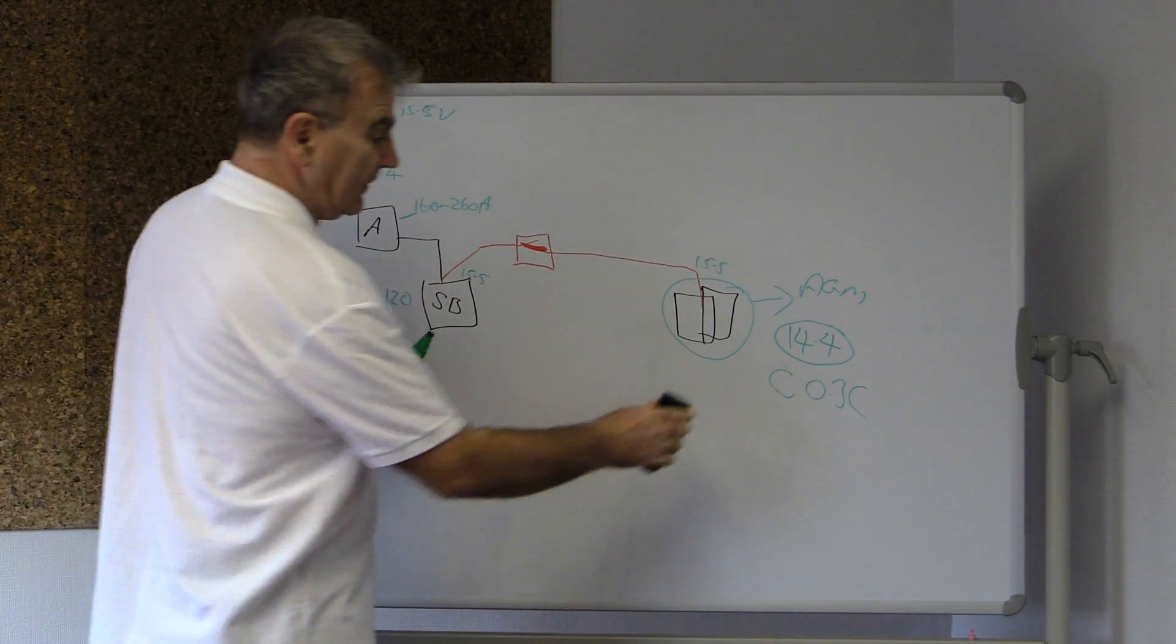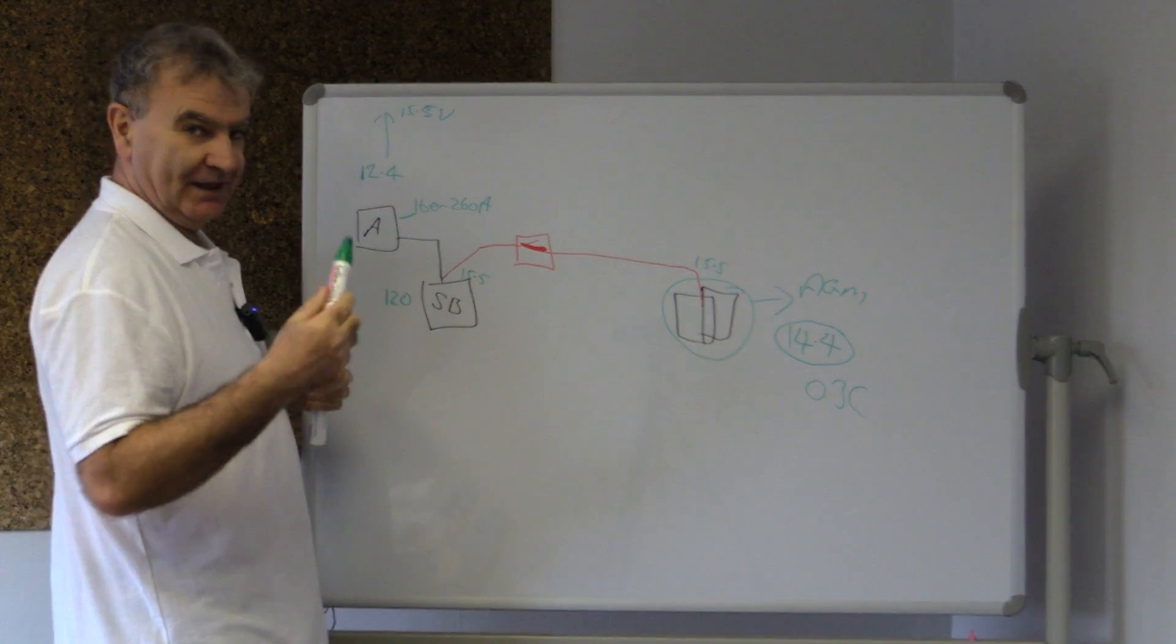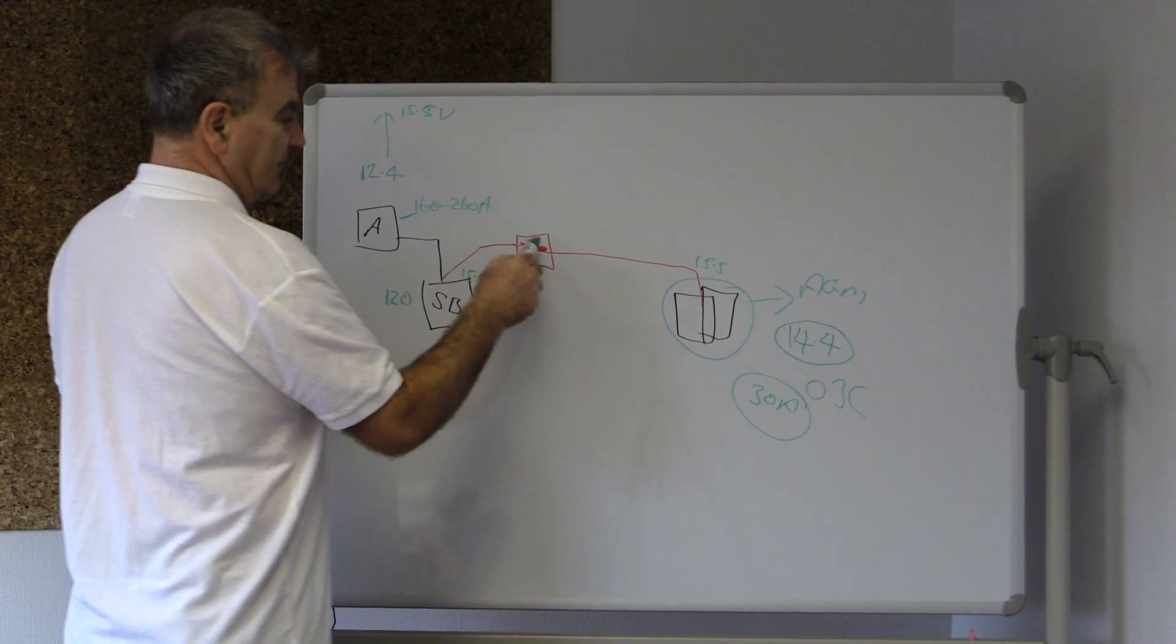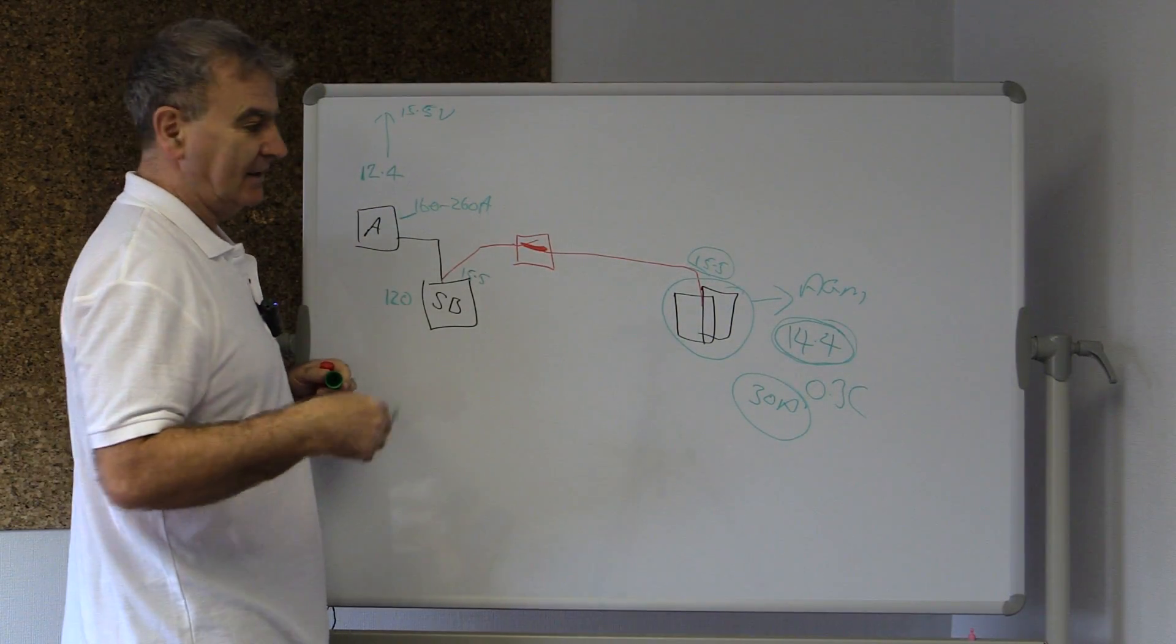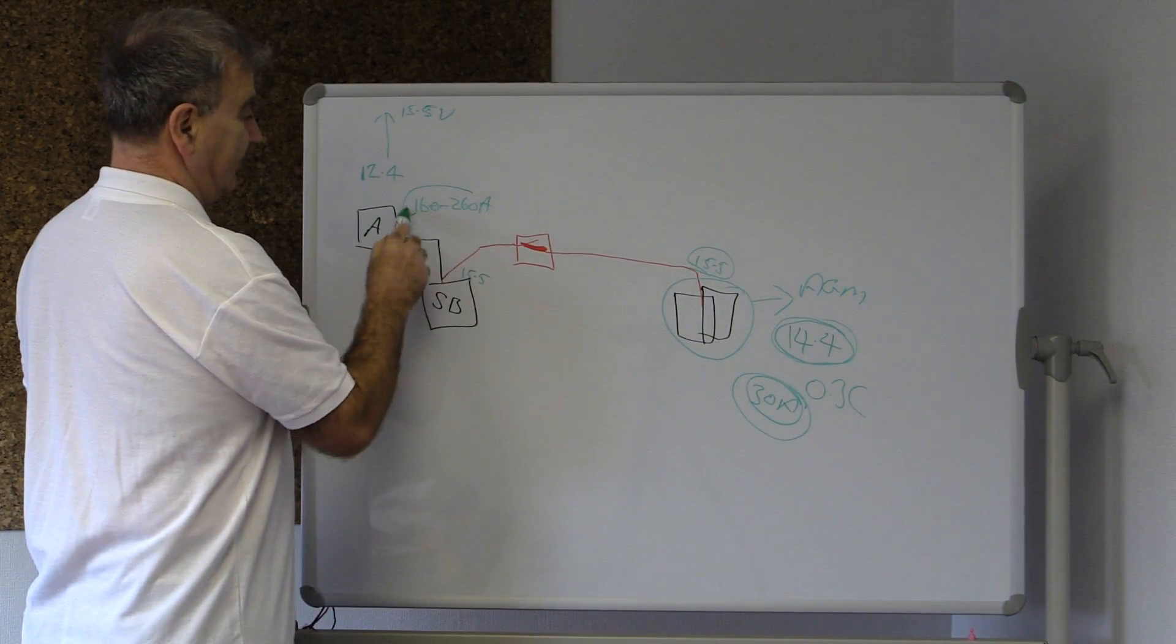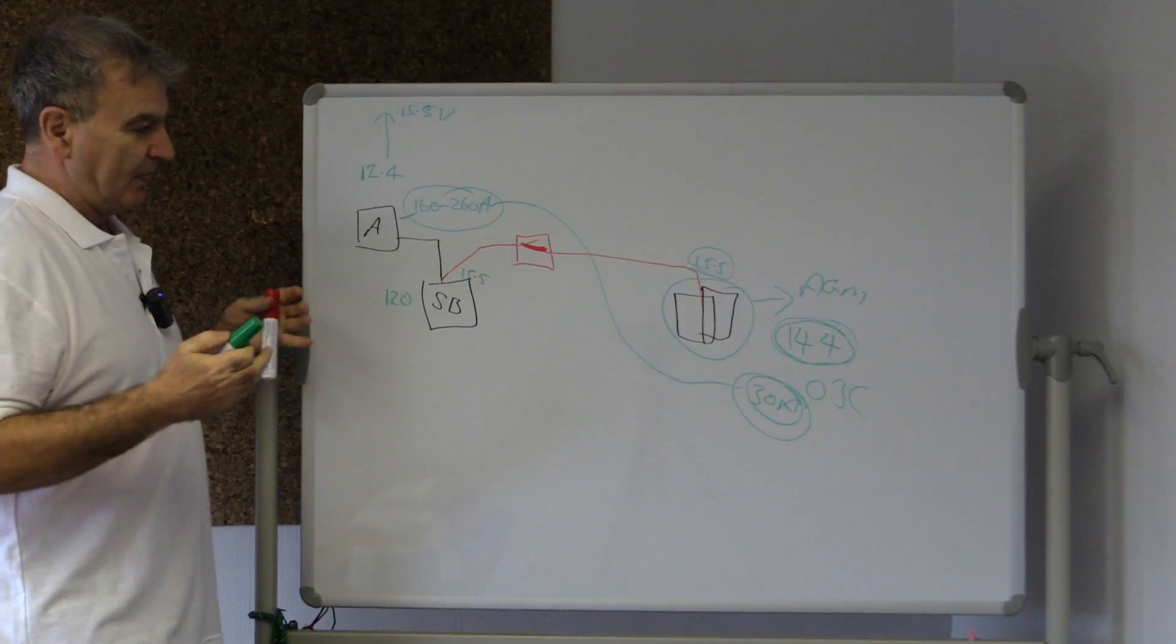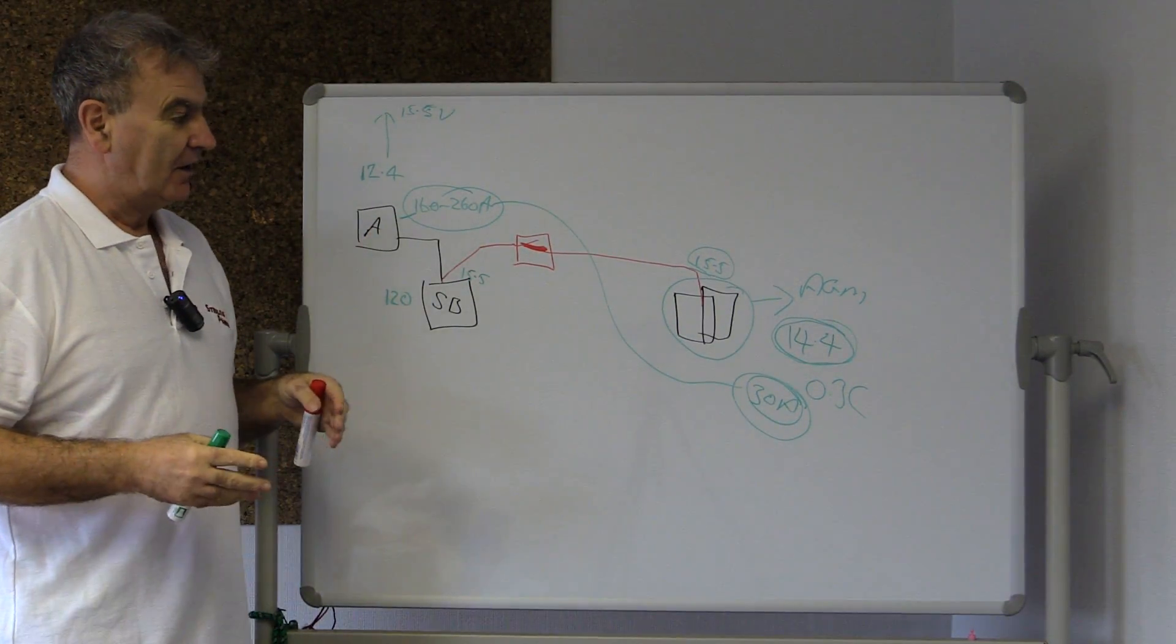That means that if you've got a 100 amp-hour battery, the fastest you can charge it on a regular basis is 30 amps. So you're now charging at 15.5 volts, so you're way above that. You're already starting to gas your battery. And the maximum charge rate is 30 amps, and you've got a 150 to 250 amp alternator. Well, you're definitely exceeding the rate there.